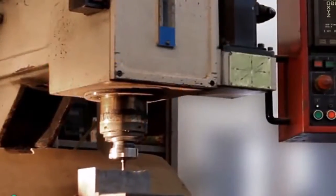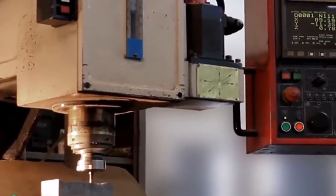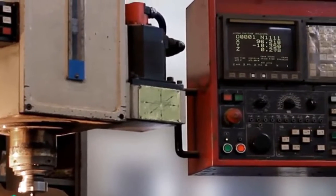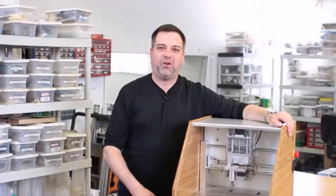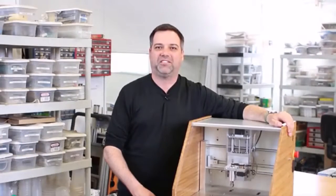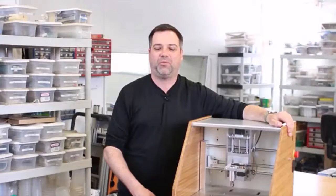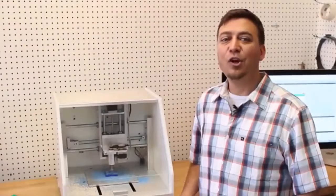CNC mills can be intimidating—the setup is complicated, there's a lot of software, and they're huge. 3D printers are easy to use, but they can only print one type of material and they're not suited for high accuracy. So we made the Nomad 883 to close the gap. It's as simple to operate as a 3D printer with all the power of a milling machine.